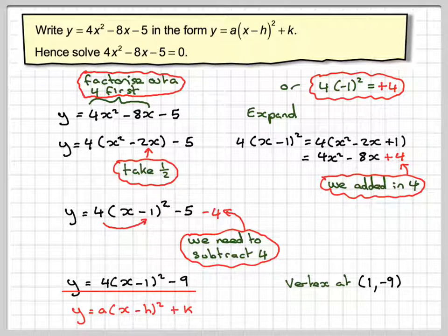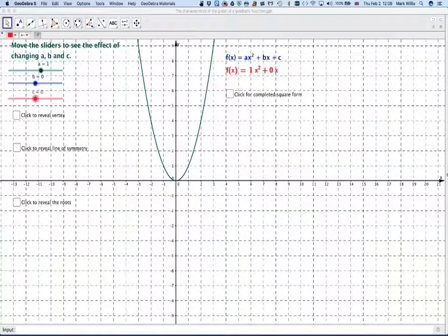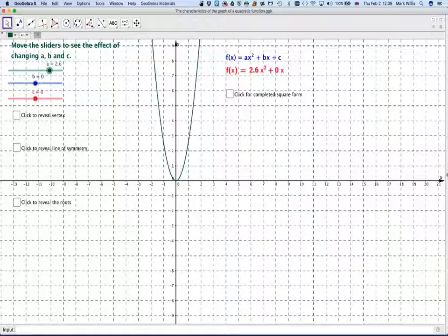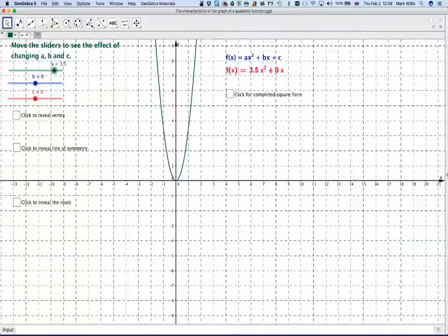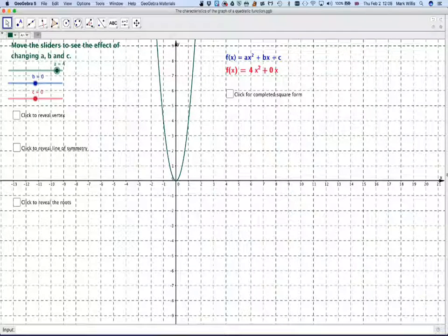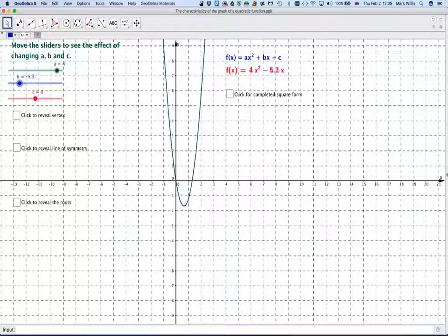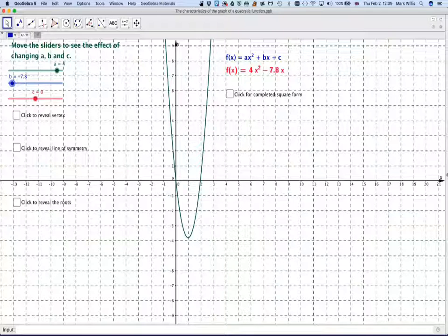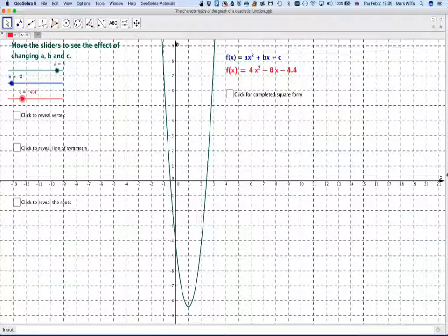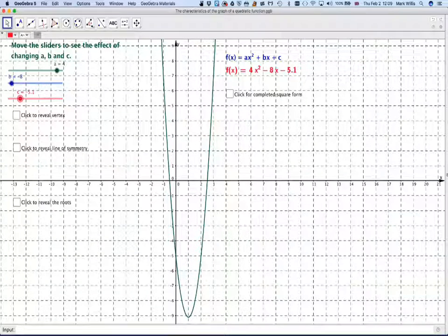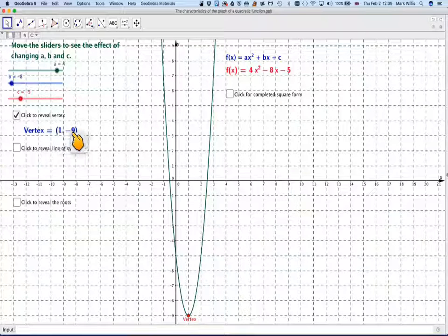So here's my GeoGebra applet. So I'm going to move the slider for a to 4. Okay, and then my b to minus 8. And then my c to minus 5. Okay, and if I click here, it will reveal the vertex. And then we see that the vertex is at (1, minus 9).